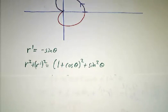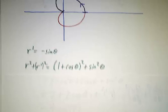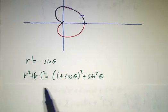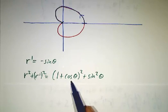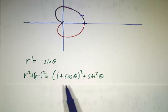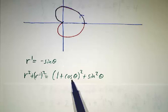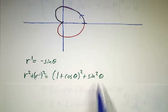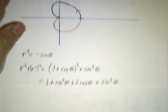Okay, so we just compute. r prime is minus sin θ. And r squared plus r' squared is 1 plus cos θ squared plus sin θ. And note, this is not 1 plus cos θ. It's 1 plus cos θ quantity squared plus sin θ. We multiply the whole thing out.